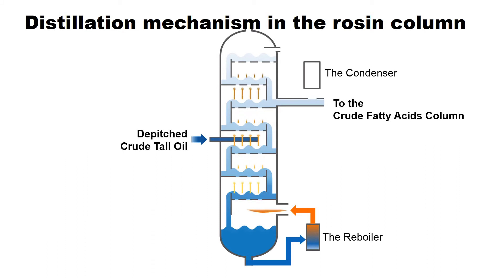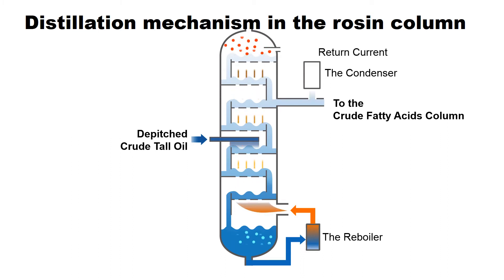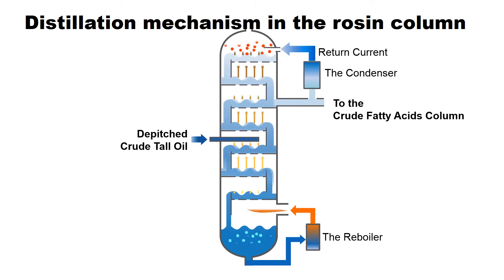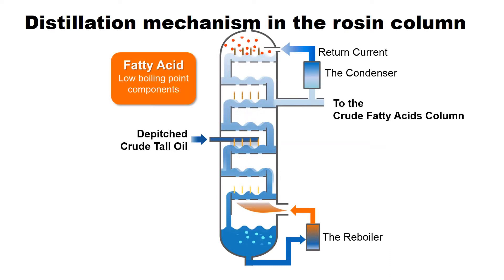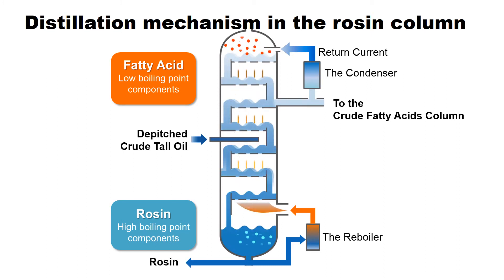The low boiling point components subsequently concentrate on the upper trays of the column. Vaporized components in the column contain large amounts of fatty acids, some of which will be cooled down at the condenser and returned to the upper side of the column as a reflux liquid. This distillation is carried out on all sieve trays. Consequently, fatty acids with a low boiling point will be concentrated in the upper side of the column, while rosin, which has a high boiling point, will be collected and taken out from the bottom.